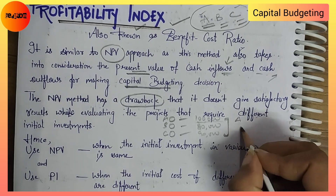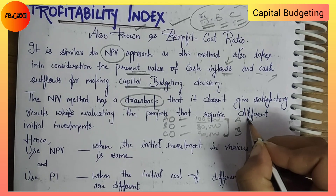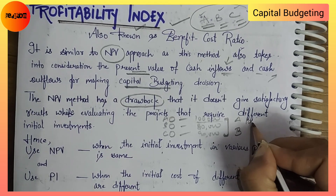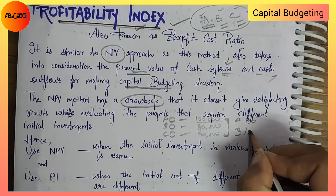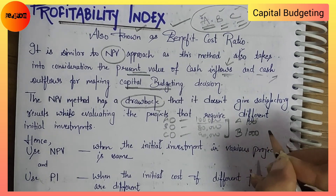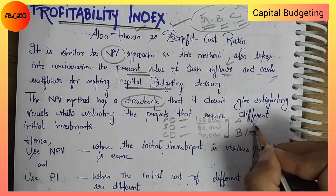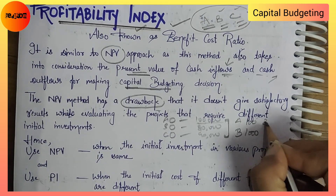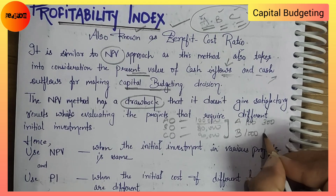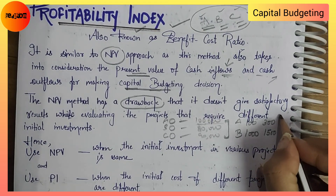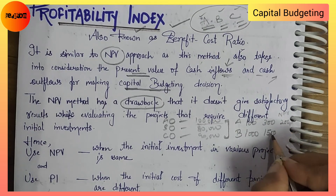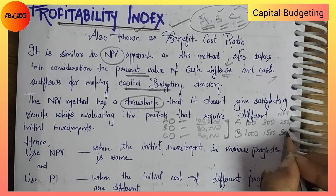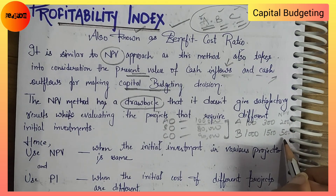Suppose you have two projects: Project A with an initial investment of 100 rupees and Project B with an initial investment of 1,000 rupees. Project A returns 300 rupees and Project B returns 1,500 rupees. According to the NPV method you would choose Project B because the NPV is highest.